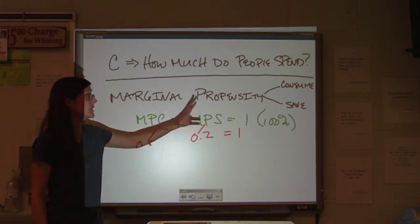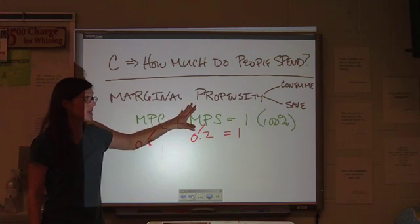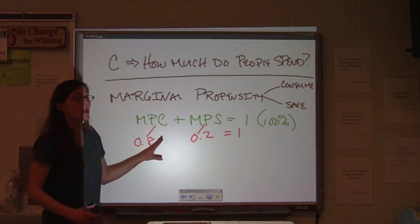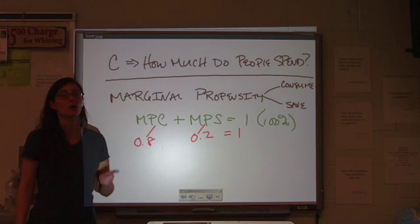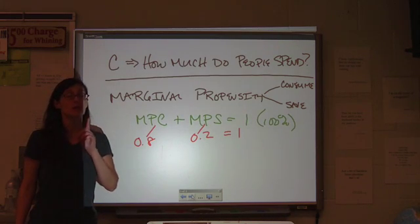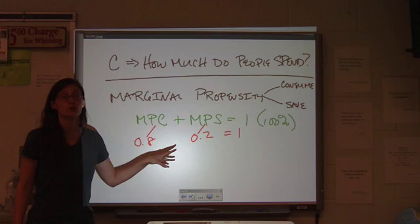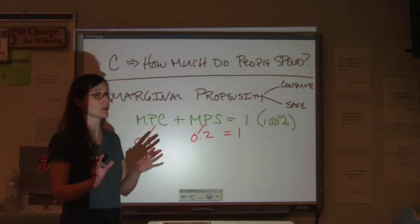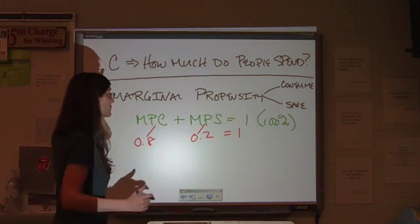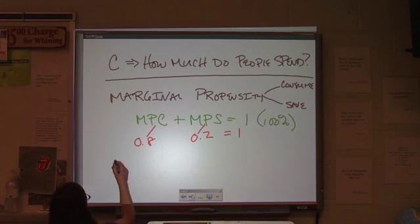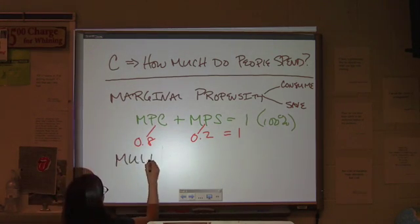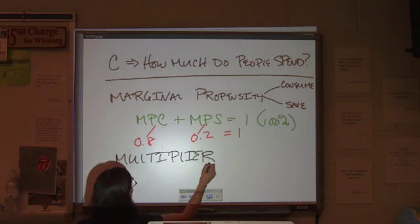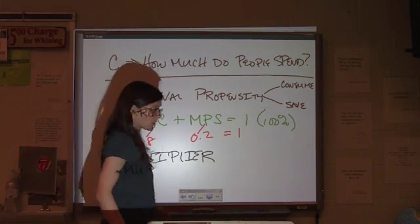So, savings is a leakage because money is draining out of that spending stream. We want to know how much people are going to spend. Now, the other way that MPC and MPS are used is to calculate the multiplier. And this is another term that's going to keep coming back, so you need to make sure that you are familiar with it.